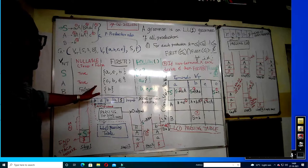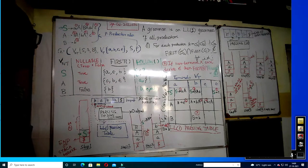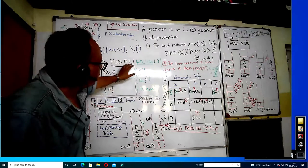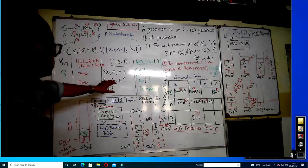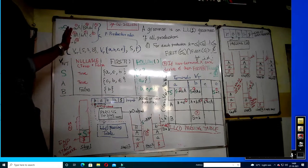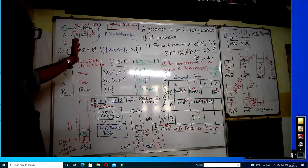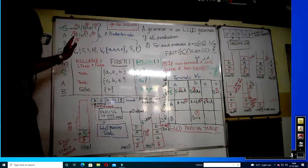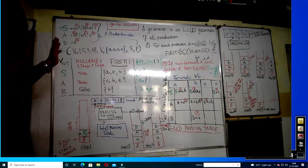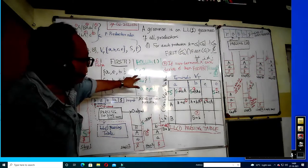One thing to remember: the dollar symbol is the end-of-input marker, and it always belongs with S. Dollar cannot appear in FIRST in any position — it is always in the FOLLOW table. If S comes between any rule before the end, then any variable or terminal can be in the FOLLOW of S. But here by inspection, S is not found in between any rule — S is only on the left-hand side.